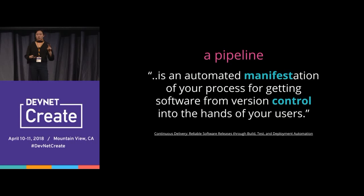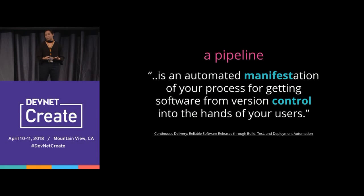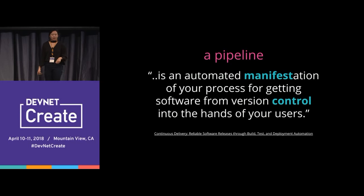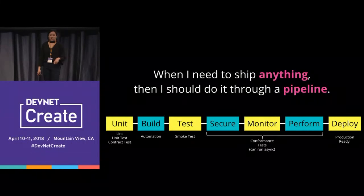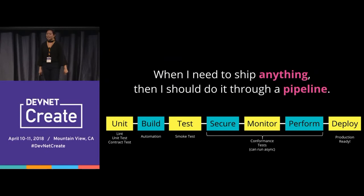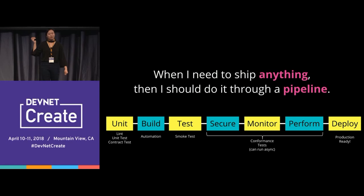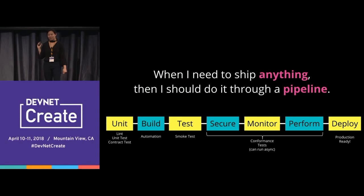Second is control. From an auditability perspective, you can put a lot of control into your pipelines, whether that be manual approvals or something else. When I need to ship anything, I usually put together about seven steps in my pipeline template.